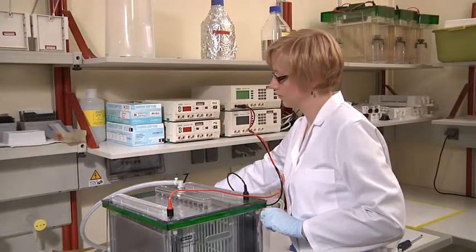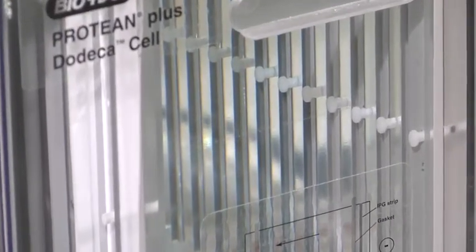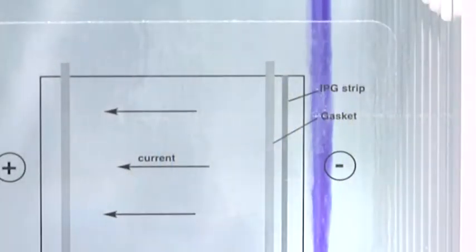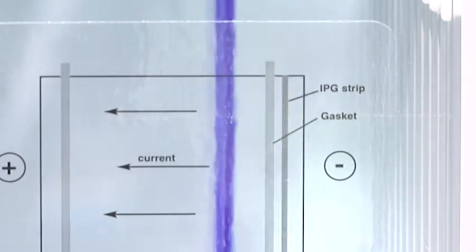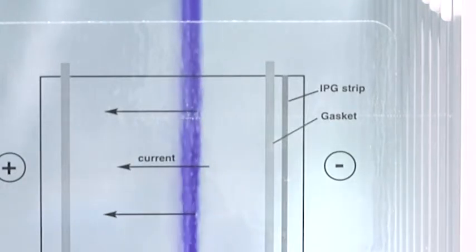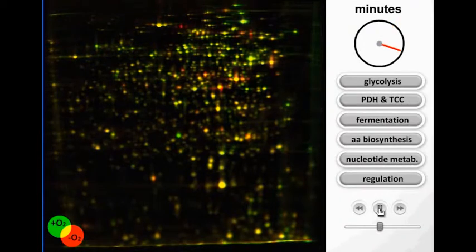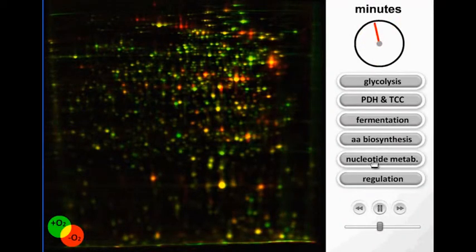During this step, the molecules are separated by size in an orientation 90 degrees from the first. This two-step procedure leads to a spot-like distribution of proteins on the final two-dimensional gel.